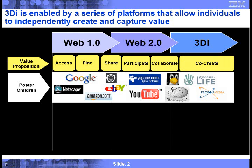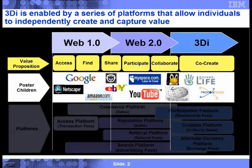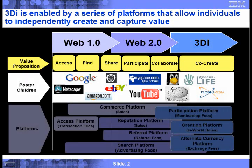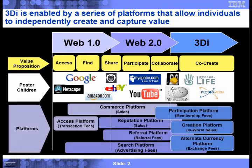Turning to platforms: in Web 1.0, value was derived through access platforms and transaction fees — for brokerage or account access, for instance. Then with the arrival of Yahoo, eBay, and Amazon, a commerce platform was built upon which you could transact fungible currency for content.